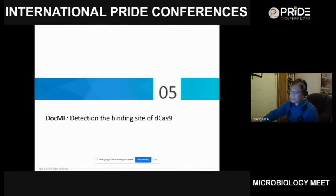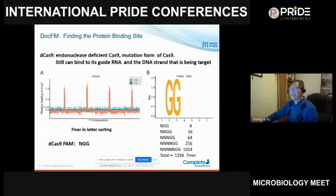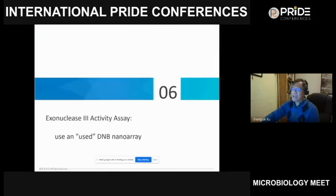We also tested the binding site using dCas9 — a mutant of Cas9 that can bind with a guide RNA but cannot cleave. Running the same analysis, the 5' end showed almost equal frequency for all 6-mers, while the 3' end clearly showed spiked 6-mer frequencies at specific positions. Analyzing those high-frequency 6-mers, the sequence was NGG — exactly the same PAM as identified by cleavage — confirming this approach works for binding without cleavage.